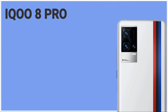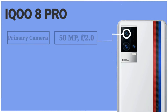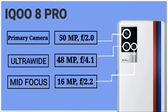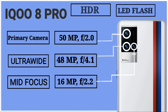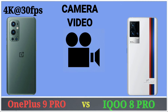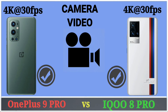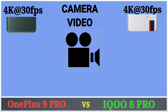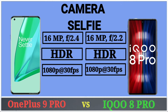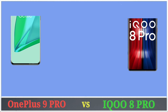Vivo iQOO 8 Pro has a triple camera setup. Its primary camera is 50 megapixel aperture f/2.0, ultrawide 48 megapixel aperture f/2.2, and mid-focus 16 megapixel aperture f/2.2. It also has LED flash and HDR. For video recording, OnePlus 9 Pro can record 4K at 30fps and iQOO 8 Pro also can record 4K at 30fps. For the selfie camera, both OnePlus 9 Pro and iQOO 8 Pro have 16 megapixel aperture f/2.4.